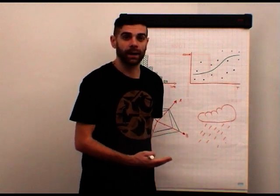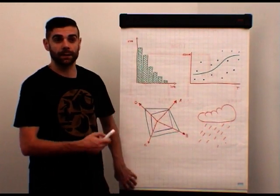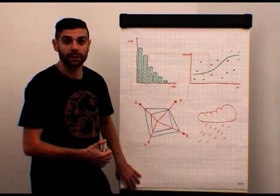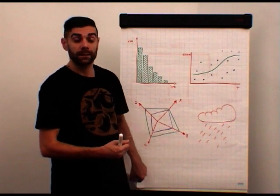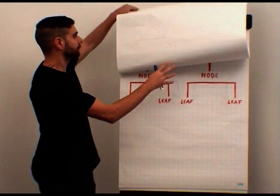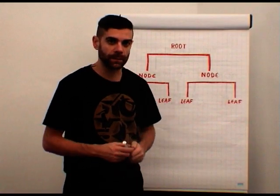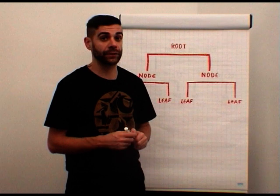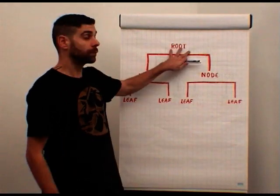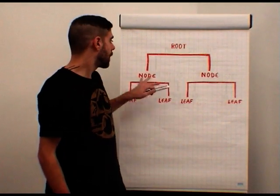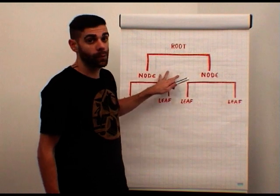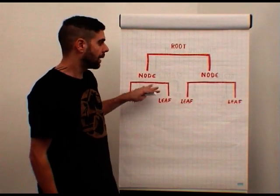In weather forecasting we use predictive models with a structure we call decision trees. What a decision tree is basically is a structure. We have a root, a starting point, we have nodes where we make decisions, and we have leaves.